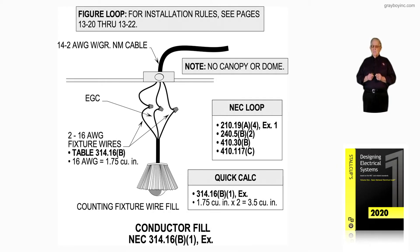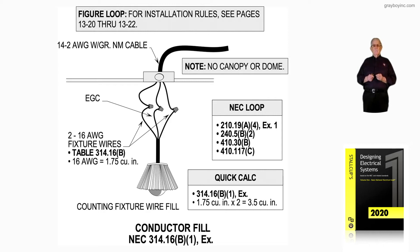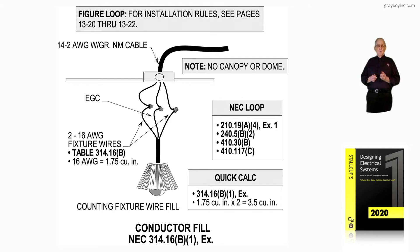This illustration is still dealing with conductor fill in accordance with 314.16B1, but we're applying the exception. Here we have fixture wire involved — this fixture wire is connecting to the branch circuit from the box. Notice in the note it says no canopy or dome present. The figure loop says for installation rules, see pages 13-20 through 13-22, giving you more help concerning this fixture wire.